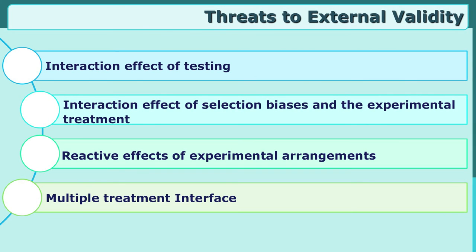Now let us see the threats to external validity. External validity refers to the generalizability of experimental findings. We have established the relationship between independent variable and dependent variable, and now we want to generalize it to the whole population. There are four threats to external validity: interaction effect of testing, interaction effects of selection biases and the experimental treatment, reactive effects of experimental arrangements, and multiple treatment interference.